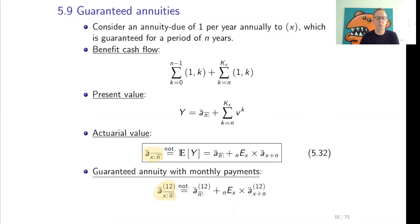We consider an annuity of one per year annually to x, and it's an annuity due, so that means it's paid at the beginning of the period. It is paid to x and it is guaranteed for a period of n years. The payment is sure, independent of survival or not, for the first n years. The benefit cash flow then looks as follows: there is a payment of one at time k, where k goes from zero to n minus one, and then from time n on there is a payment of one at time k lifelong.